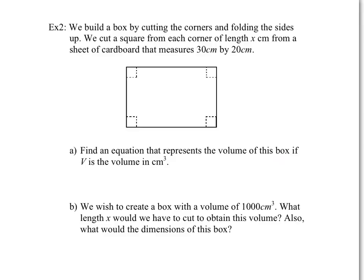Next example: we're building a box by cutting the corners and folding the sides up. Here's a piece of cardboard. You cut the corners from the sheet, then fold those sides over to create a three-dimensional box with no top. We're going to cut squares of length X from each corner — so all four cut lengths are the same, all equal to X. Normally the sheet of cardboard measures 30 centimeters by 20 centimeters. Find an equation that represents the volume of the box if V is the volume in centimeters cubed.